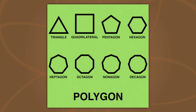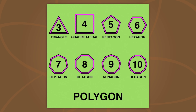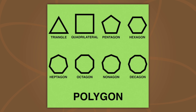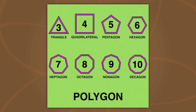A polygon is a shape with lines that connect. The number of sides tells us the name of the shape.